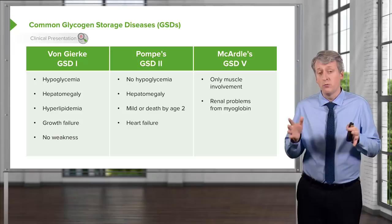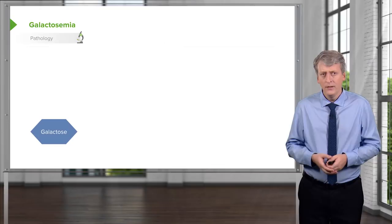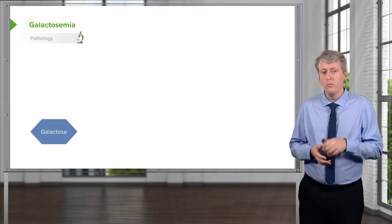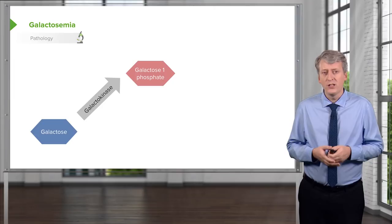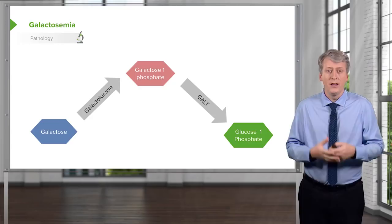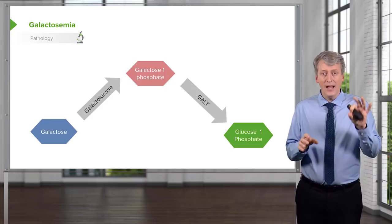Let's switch to another type of sugar: galactosemia. Remember that galactose is metabolized through a pathway involving two major enzymes. Galactose is turned into galactose-1-phosphate through galactokinase. Galactose-1-phosphate then uses the enzyme GALT, which turns it into glucose-1-phosphate, and then we can metabolize the glucose. Remember that lactose, the sugar in milk, is galactose plus glucose stuck together. Lactase breaks those apart, and then for the galactose we use this pathway to metabolize it.